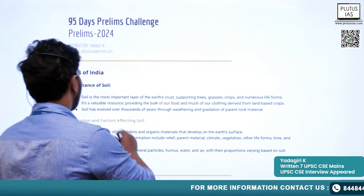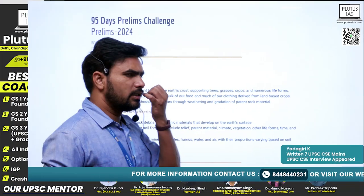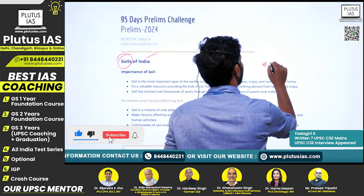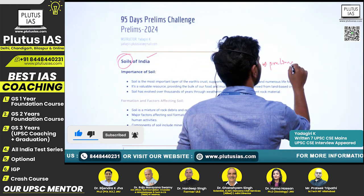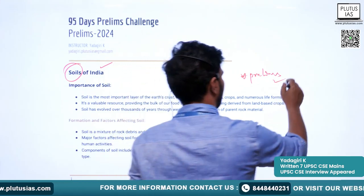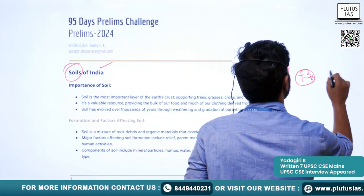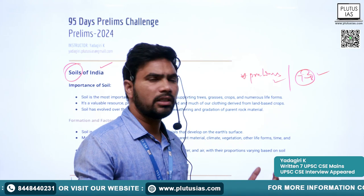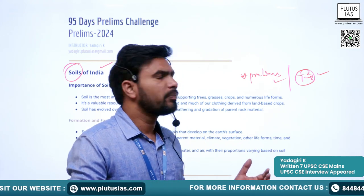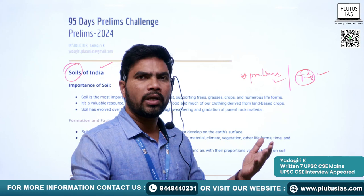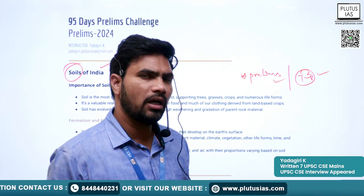Good morning students, welcome back. Today we will discuss about the soils of India. This is a very important topic from the point of view of examination, especially from the prelims point of view. Broadly, we can divide the soils of India into seven to eight categories. The most predominant and accepted divisions include alluvial soil, black cotton soil, red and yellow soils, etc.